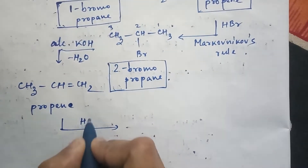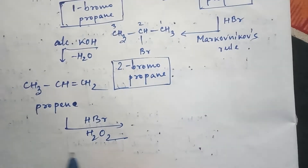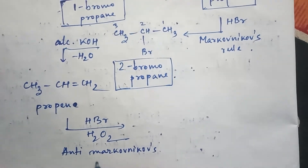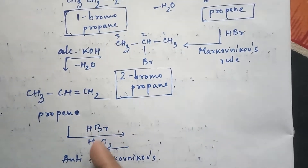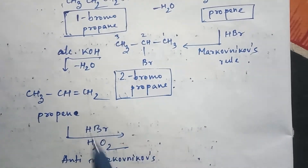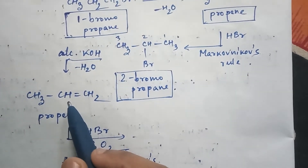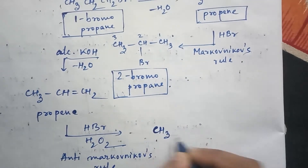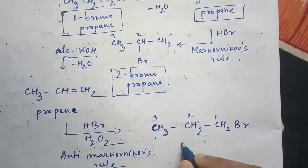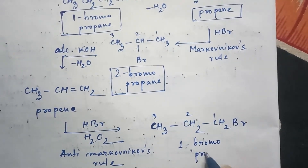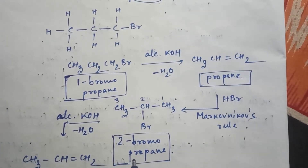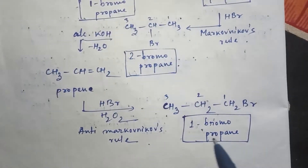Now, in propene, if we use hydrogen bromide and peroxide — that is anti-Markovnikov conditions — the bromine (negative part) will go to that carbon atom of the double bond where the maximum number of hydrogen atoms are present, and the hydrogen will go to that carbon atom where the least number of hydrogen atoms are present. The product will be CH3-CH2-CH2-Br, which by IUPAC naming is 1-bromopropane. This completes the procedure to convert 1-bromopropane to 2-bromopropane and back from 2-bromopropane to 1-bromopropane.